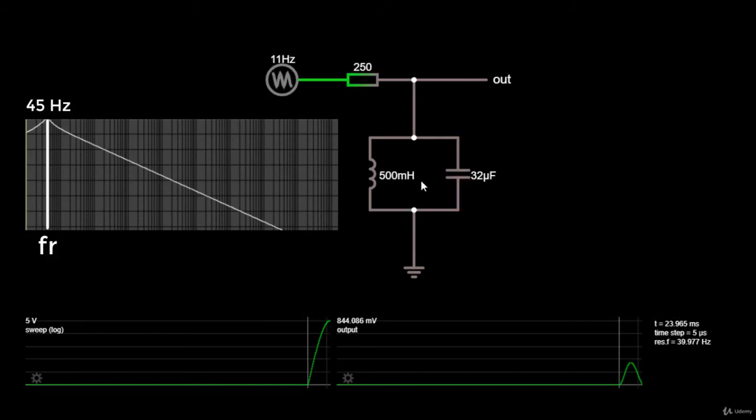Alright let's start the simulation and see if this filter does the job and really allows only the signals to pass through with a frequency close to this resonant frequency of 45 Hz.